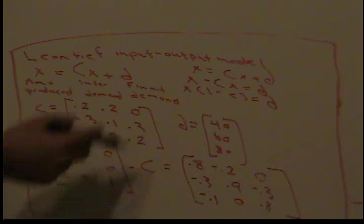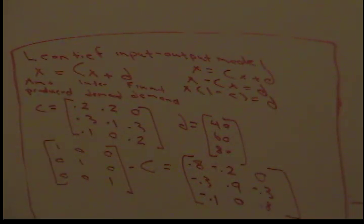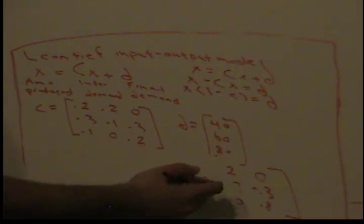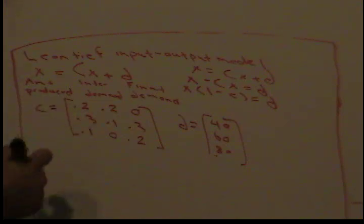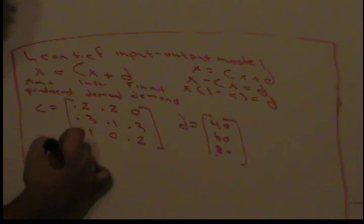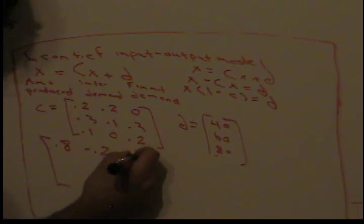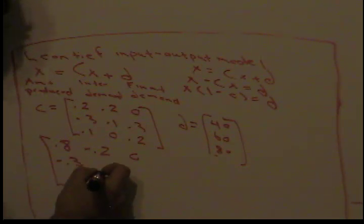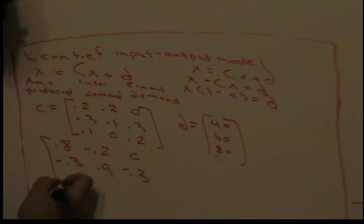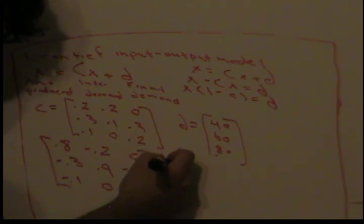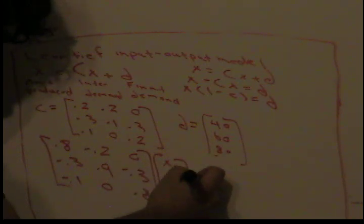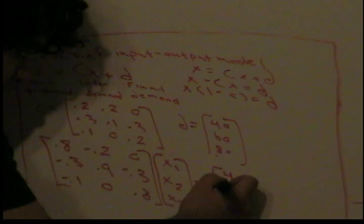So (I minus C) equals [0.8, -0.2, 0; -0.3, 0.9, -0.3; -0.1, 0, 0.8]. Putting this in matrix form, we have (I minus C) times [x1, x2, x3] equals our final demand [40, 60, 80].